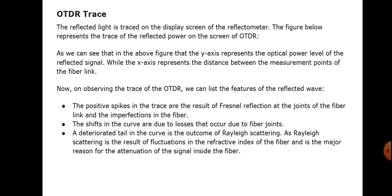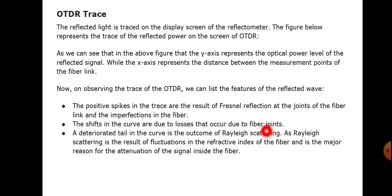In the OTDR trace, the reflected light is traced on the display screen of the reflectometer. Reflected power is shown on the y-axis, and the x-axis represents the distance between measurement points. Positive spikes in the trace are the results of frontal reflection at the joints of the fiber link and imperfections in the fiber, while shifts in the curve are due to losses at fiber joints. A deteriorated tail in the curve is the outcome of Rayleigh scattering — the major reason for signal attenuation inside the fiber. This OTDR can be used to measure the attenuation in the fiber.